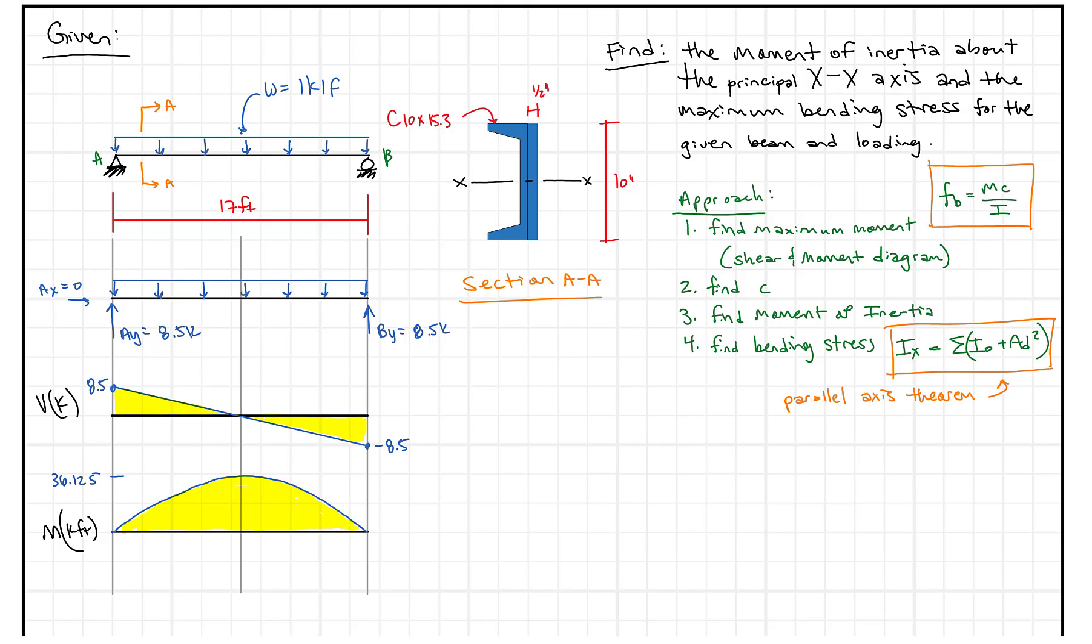We're going to continue in our series on moment of inertia. We're going to take a beam that we've been given at 17 feet long and we want to find the moment of inertia about the principal x-axis and the maximum bending stress for the given beam and loading. We're also given the shear and moment diagram for this beam where we end up with a maximum moment of 36.125 kip feet that we're going to use in our bending stress calculation.